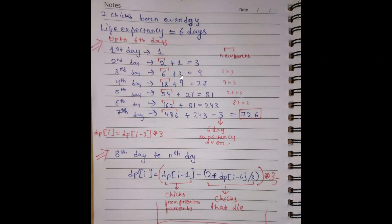On the third day, the three parents remain and each of the three gives birth to two children, so that's six newborns, making a total of nine. On the fourth day, the nine parents remain, and nine of them give birth to two each — that's 18 newborns — so total will be 27 chicks on the fourth day.